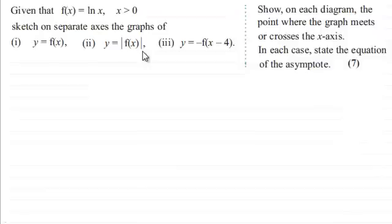y equals the modulus or mod of f of x and then in part three y equals minus f of all of x minus four and show on each diagram the point where the graph meets or crosses the x-axis and in each case state the equation of the asymptote and this is all for seven marks.